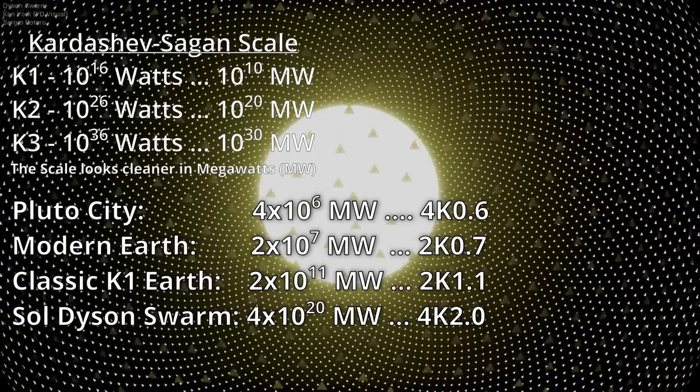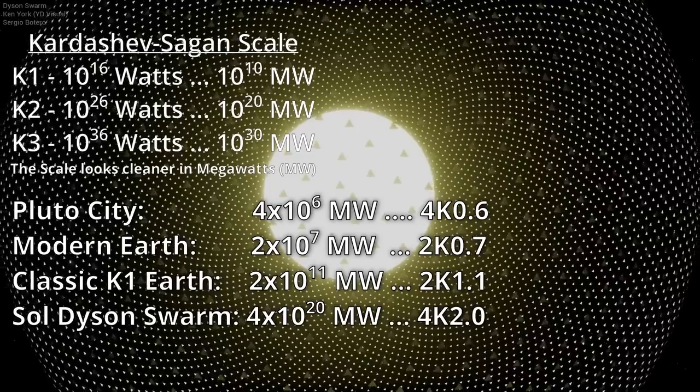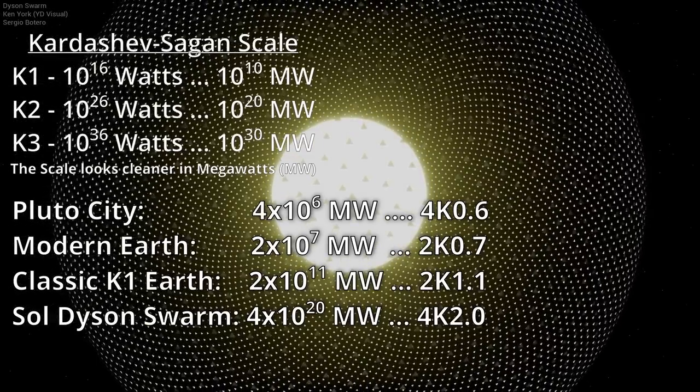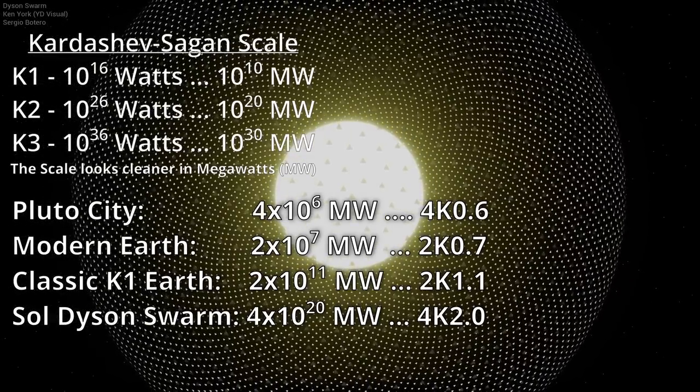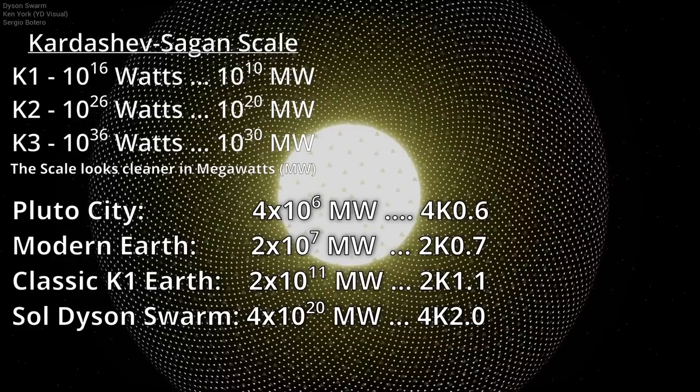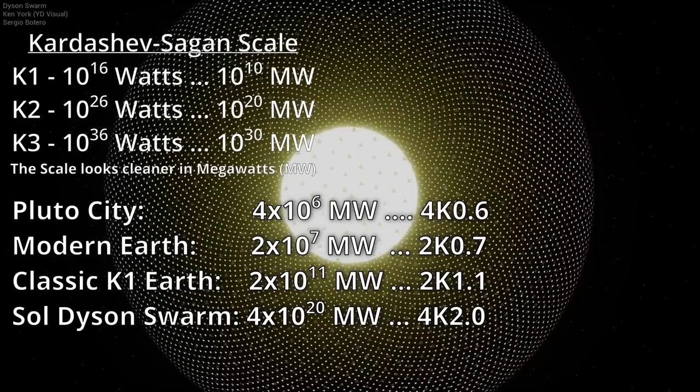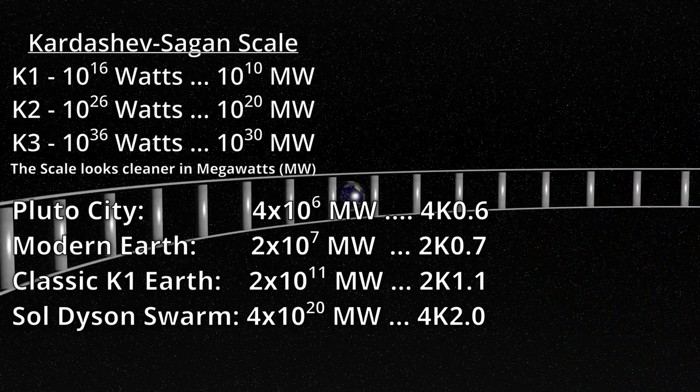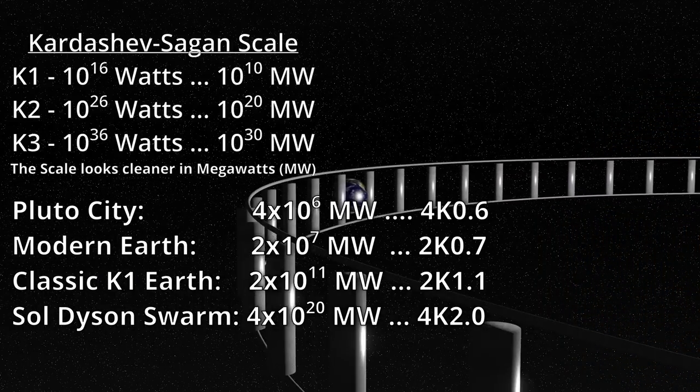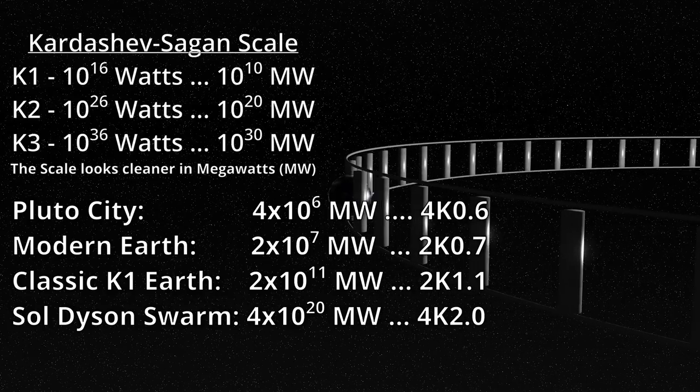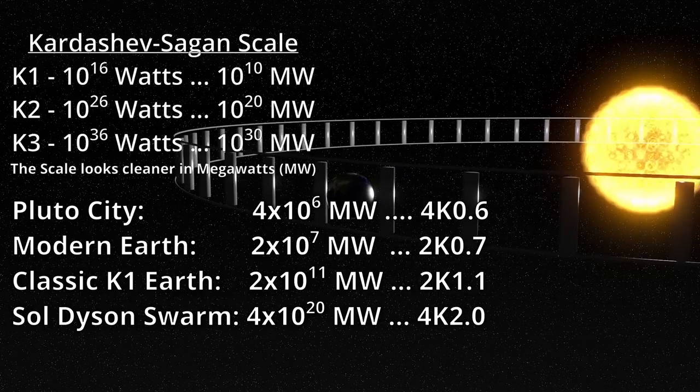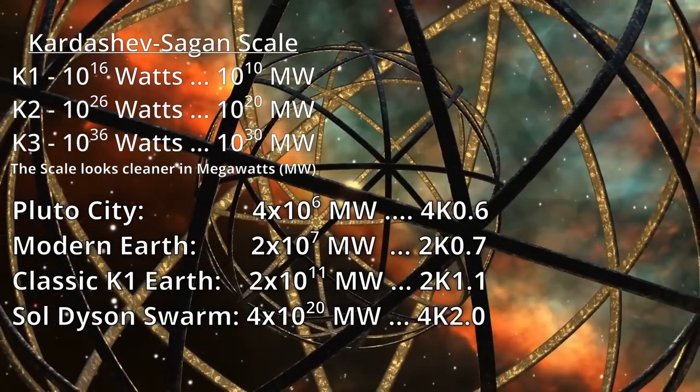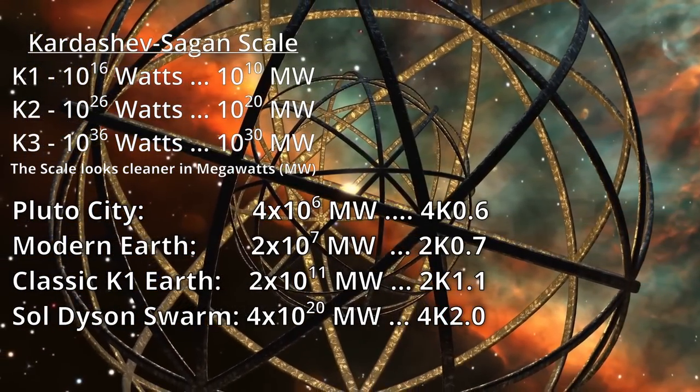Thus, a full Dyson around our Sun would be a 4 K2.0 civilization, whereas a quarter Dyson or one around the Sun a fourth as bright as our own would be a 1 K2.0 civilization or just a K2 Civ. Some ring world around our Sun might be a K1.8, and an uneven ring world could be viewed as a K1.5. Large modern nations are in the K0.6 range, and the biggest might hit K0.7 in our lifetimes.